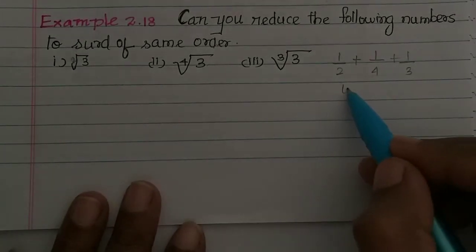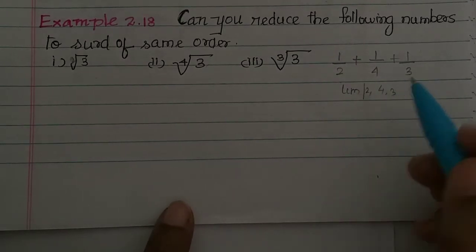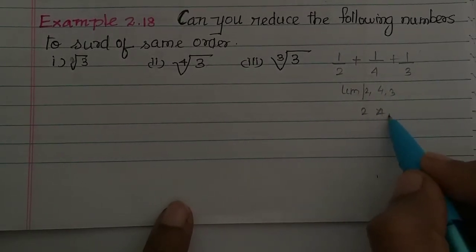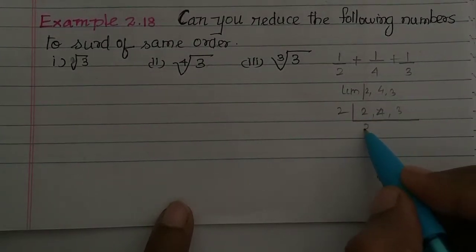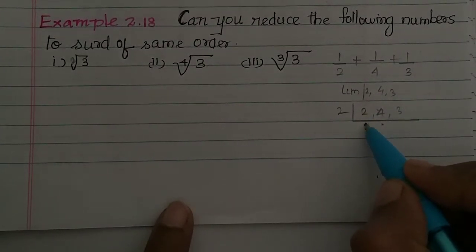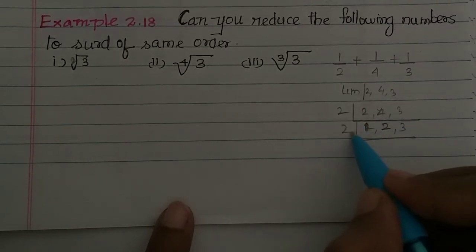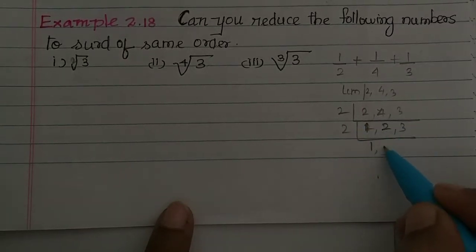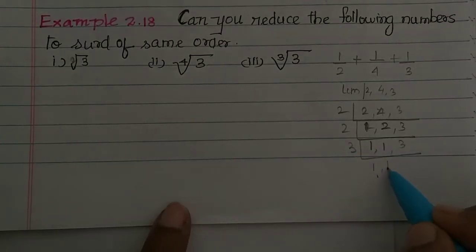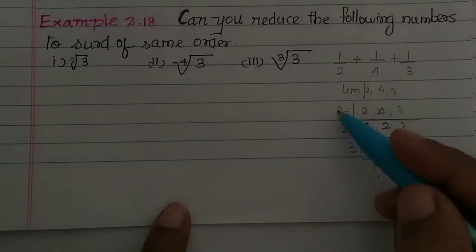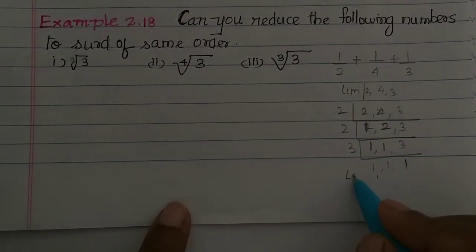So LCM for 2, 4, 3. What do we do? We will add 2, 4, 3 in the last one. 2 goes 1 time, 2 and 4. 3 goes 1 times, 1 times, and 1 times. So 2, 2's are 4, 3's are 12. Right? Then LCM is 12.